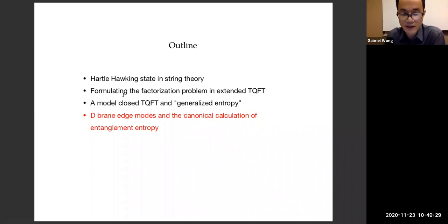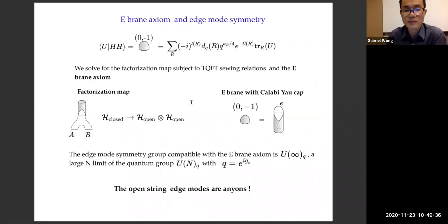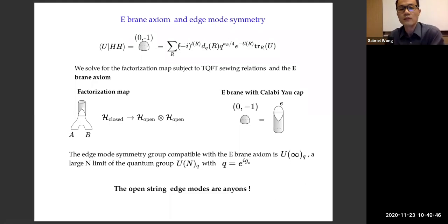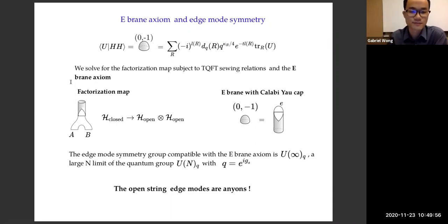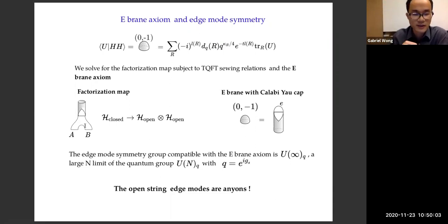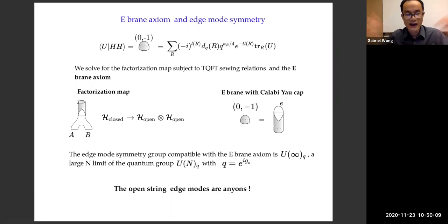Now I want to explain the D-brane edge modes and the canonical calculation of this generalized entropy. We have a state defined by this cap cobordism with an explicit expression. We want to solve for the factorization map, subject to TQFT sewing relations and the E-brane axiom. The factorization map is a cobordism taking a circle and splitting it into regions A and B — a map from the closed string Hilbert space to the tensor product of open string Hilbert spaces. In addition to the sewing relations, we impose the E-brane condition, where the cap on the left-hand side is a Calabi-Yau cap with the precise Chern class labeling.